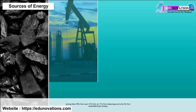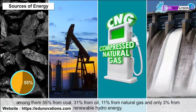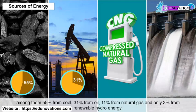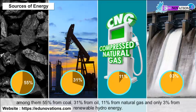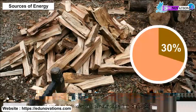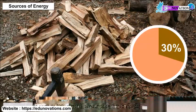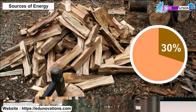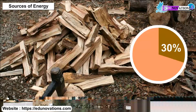If we see the entire consumption perspective, 65% of total energy consumed in India comes from commercial means. Among them, 55% from coal, 31% from oil, 11% from natural gas, and only 3% from renewable hydro energy. Firewood constitutes 30% of entire consumption.